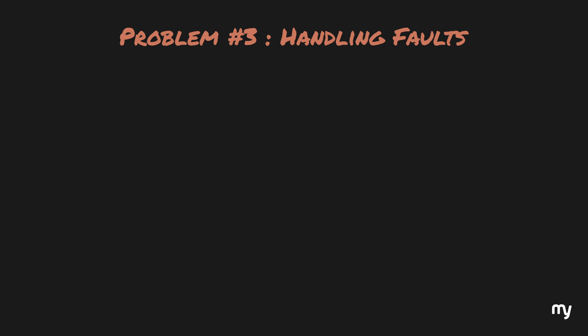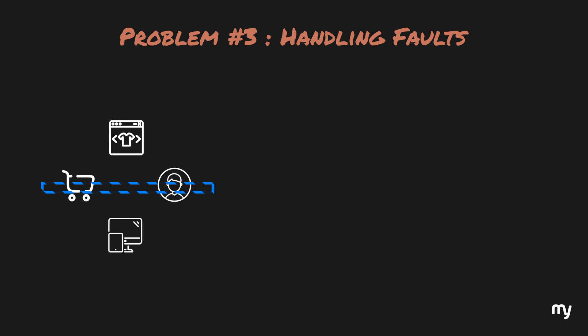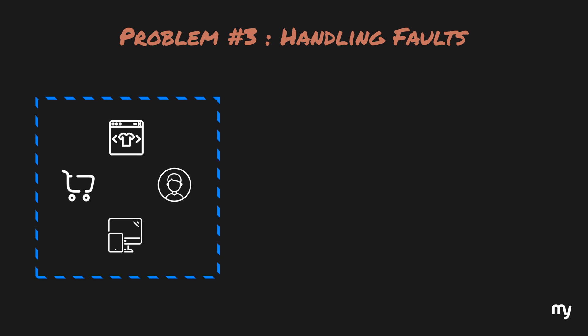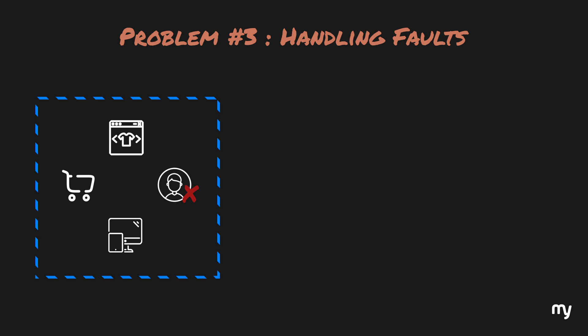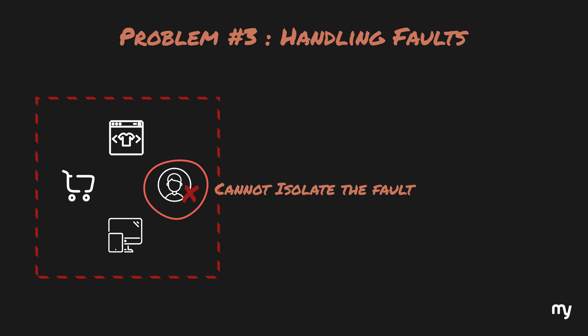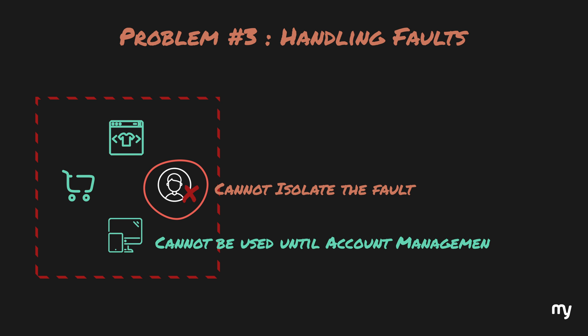These are not the only problems. A significant challenge in a monolithic system is handling faults. Imagine a case where there is an error in the account management module because of which the whole application cannot function. In this case it is not possible to isolate this fault — although there might be nothing wrong with browse, search, and checkout, they cannot be used as long as account management is not fixed.